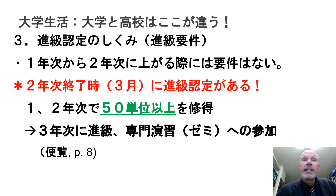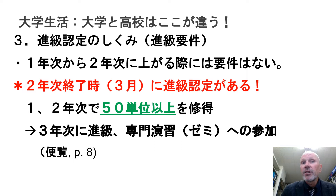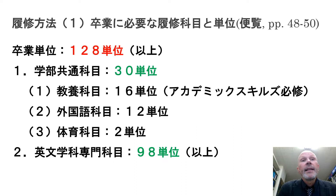Another difference between high school and university is how you move up to a higher level. Between first and second year there's no particular requirement. But if you want to go up to third year, you have to have at least 50 credits, and this allows you to participate in your Zemi. You should also be aware that over the course of four years — however long it takes you to graduate — you are required to get 128 credits altogether.